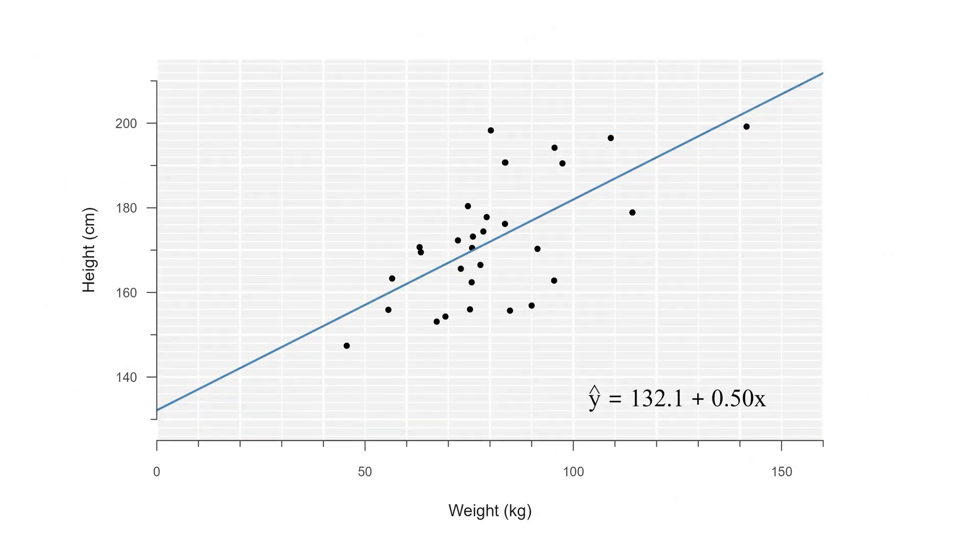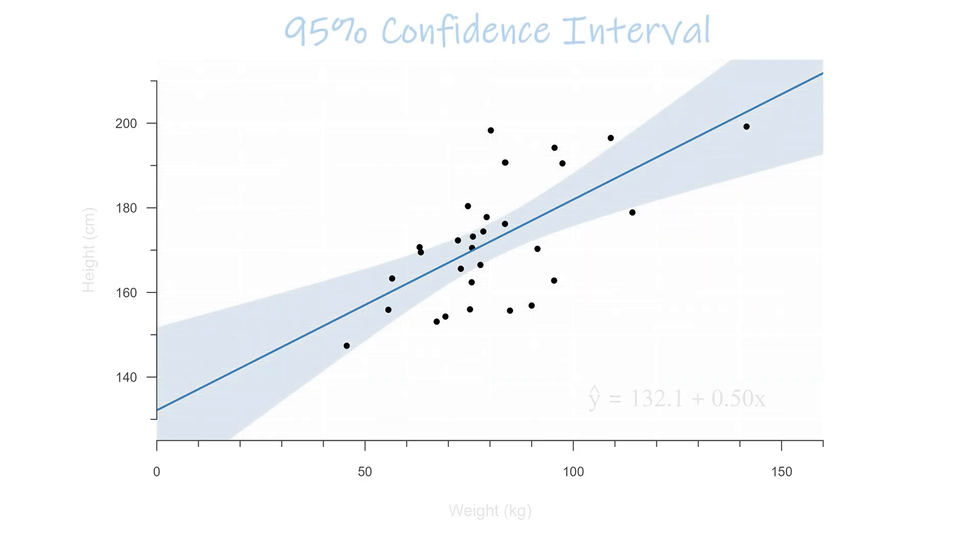Finally, also keep in mind that these are just 30 individuals, not the whole population. So there is uncertainty in this line. We can express that uncertainty in the form of a confidence interval, which shows us a range of plausible starting points and directions for the line to represent the uncertainty we have about their estimates.